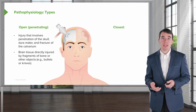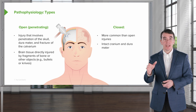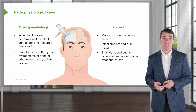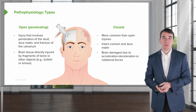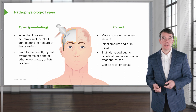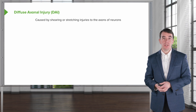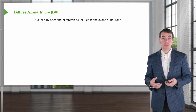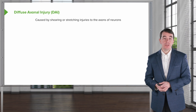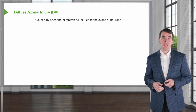We can also see closed head injuries, which are more common than open injuries. The cranium and dura mater are intact, and there's an injury to the brain underneath. The brain is damaged due to acceleration, deceleration, or rotational forces that occur as a result of the trauma, and these can be focal or diffuse. One important entity is diffuse axonal injury — the most severe form of diffuse injury to the brain. It is caused by shearing and stretching injuries to the axons or neurons as a result of rotation or severe acceleration-deceleration.